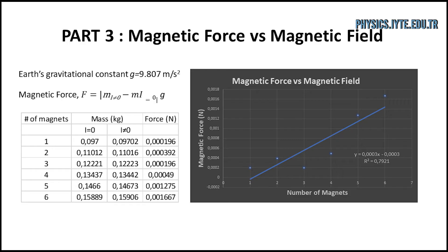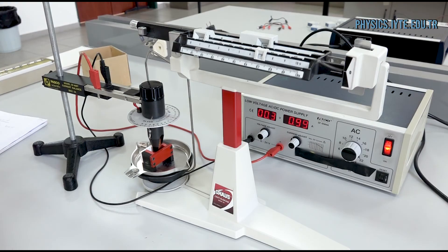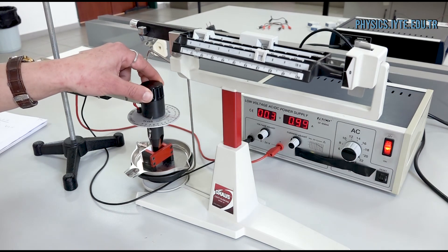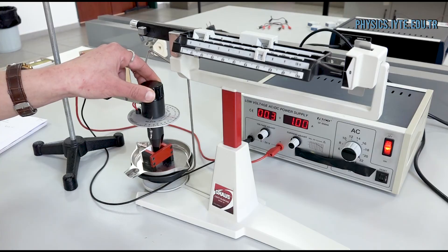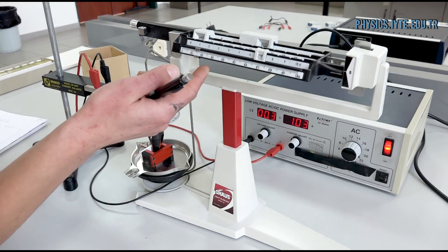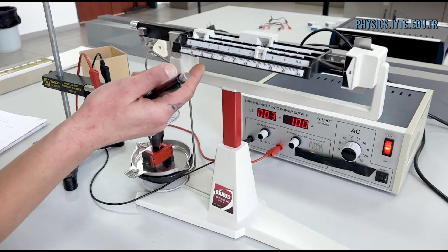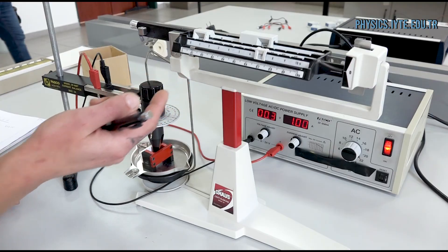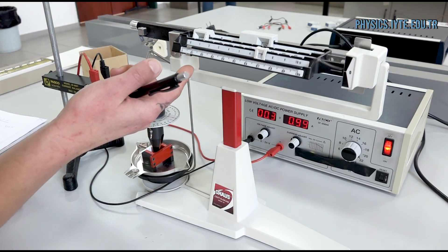The mass of the magnet assembly when there is current on the wire is subtracted from the mass of the magnet assembly when there is no current, and the result is multiplied by Earth's gravitational acceleration. In the last part of the experiment, a different magnet assembly and a different wire apparatus will be used. With them, the angle between wire direction and magnetic field can be changed both clockwise and counterclockwise. The measurement starts when the direction of current flow and the direction of magnetic field are parallel, so because sine of zero degrees is zero, the first mass reading will be the magnet's original mass.